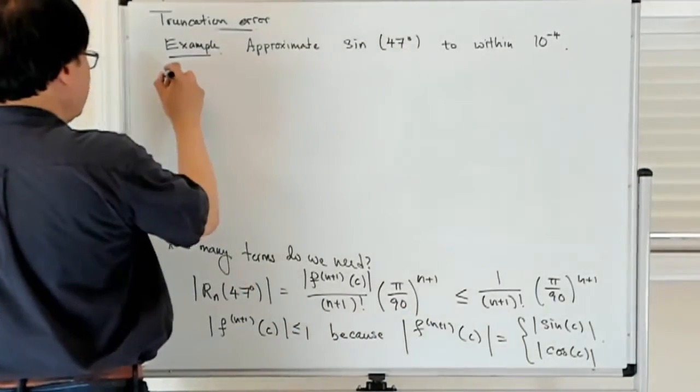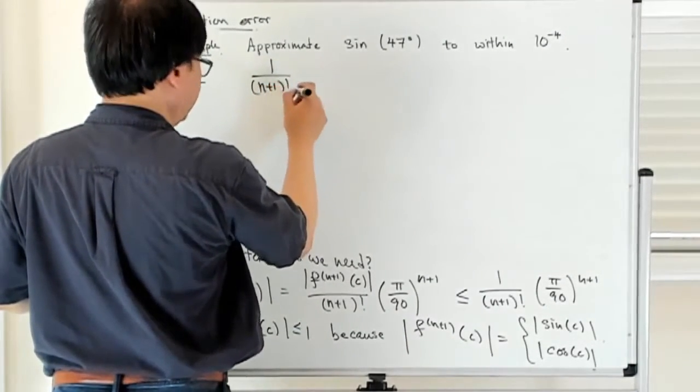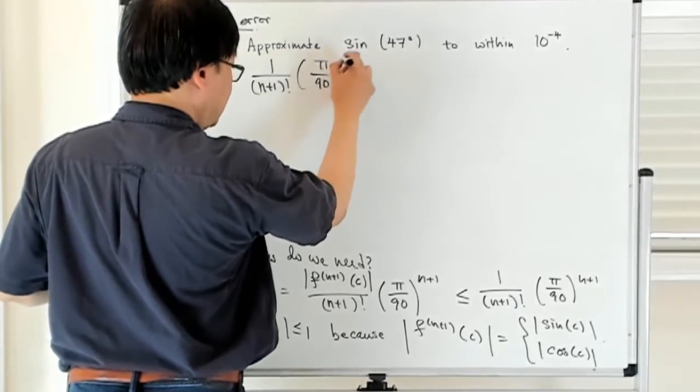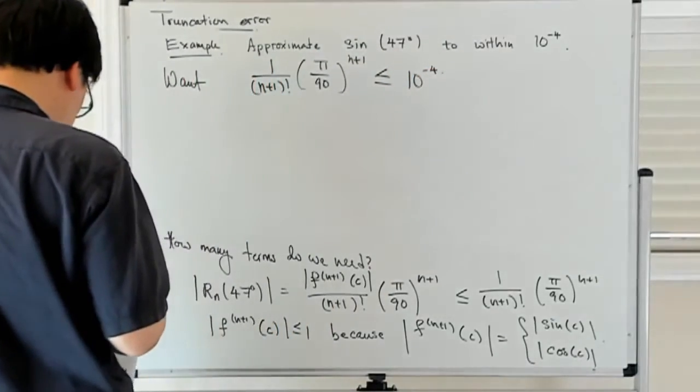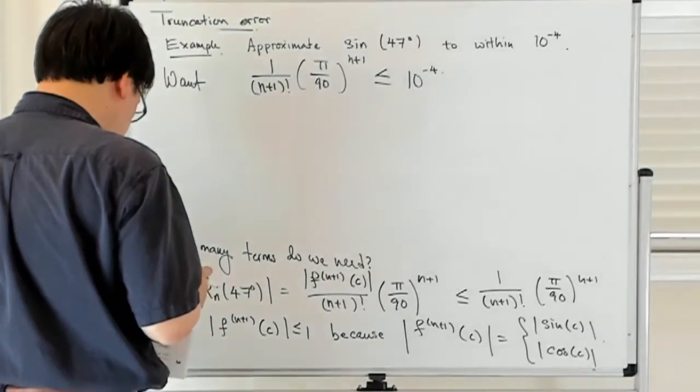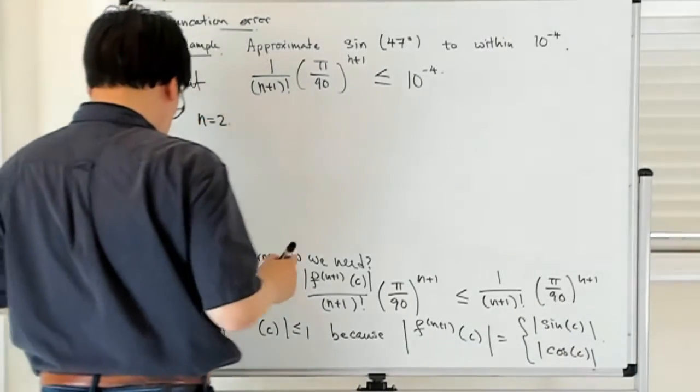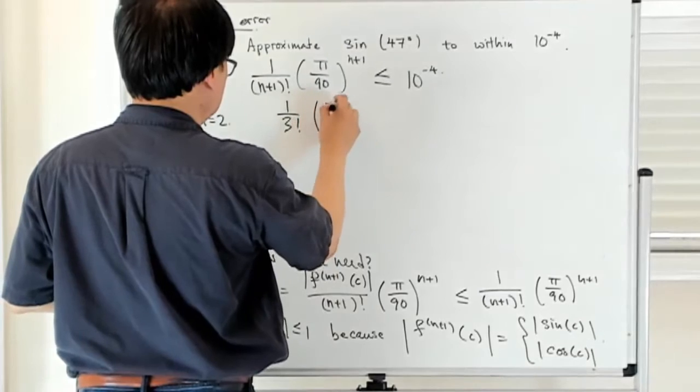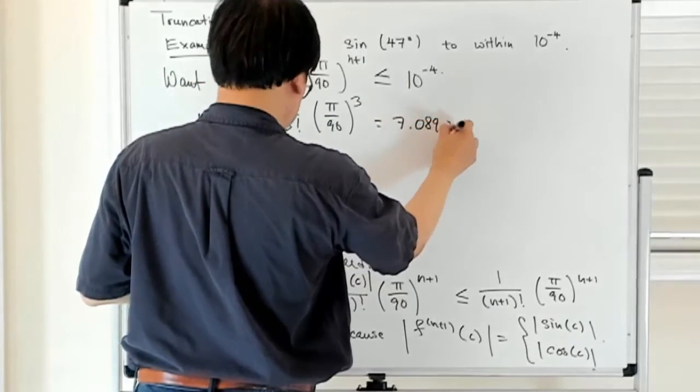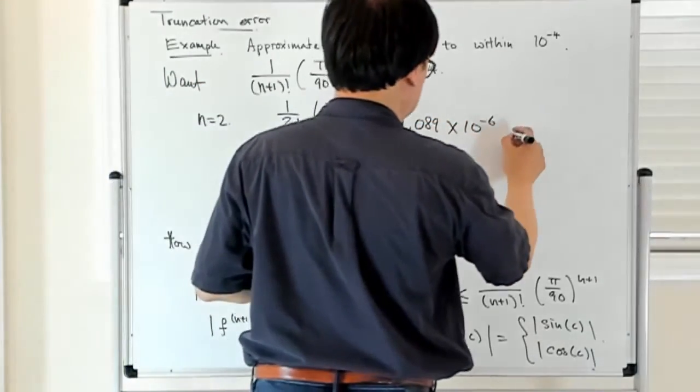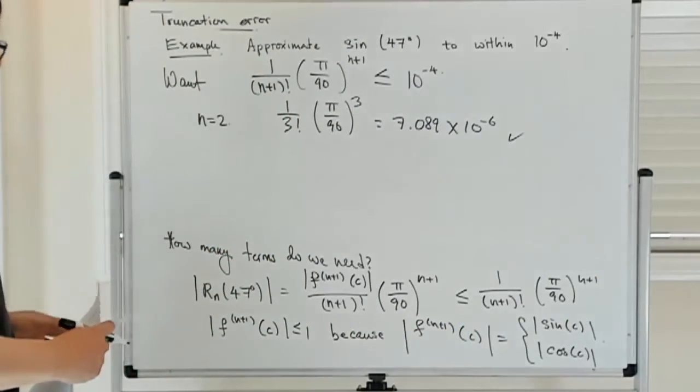So now I want 1 over n plus 1 factorial, π over 90 to the n plus first power, to be less than or equal to 10 to the minus 4. And you can check that when n is equal to 2, you get 1 over 3 factorial, π over 90 to the 3rd, which is 7.089 times 10 to the minus 6, so that is sufficient. And you can check that if you just had n equals 1, that wouldn't be good enough.